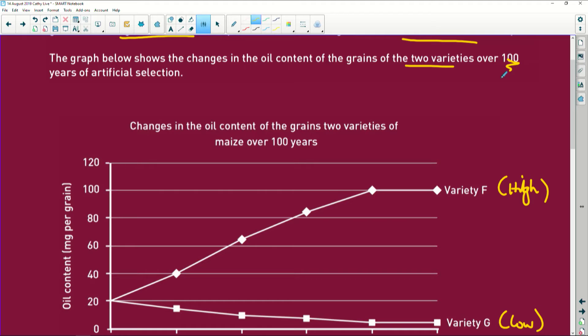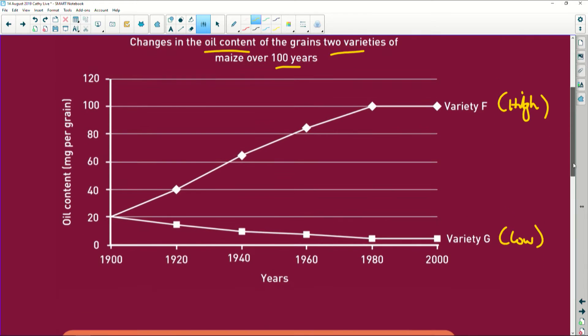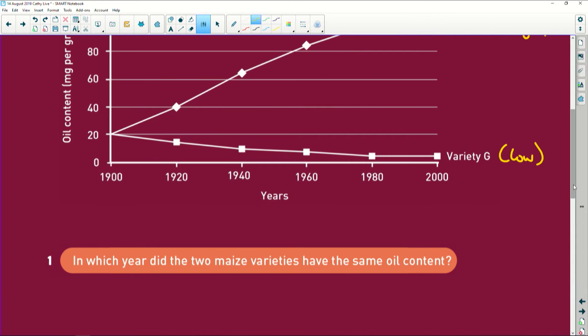So let's look here. The graph tells you it's the changes in the oil content of the two varieties of maize over 100 years. So let's look at our questions here. Dependent variable, I mean independent variable, and your dependent variable. It's your results, okay? In which year did the two maize varieties have the same? The only place where they are the same is here, which is 1900.